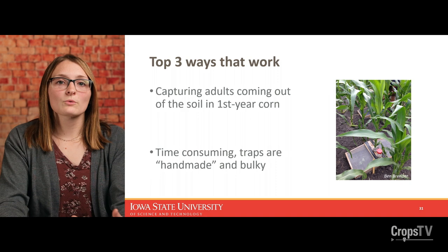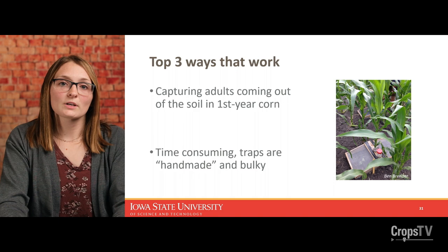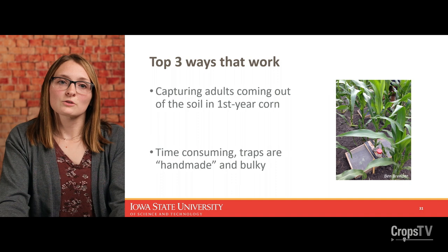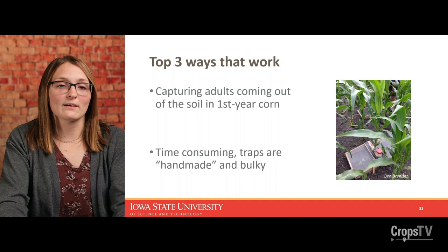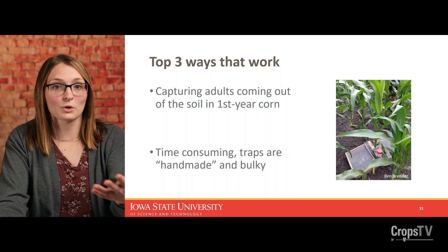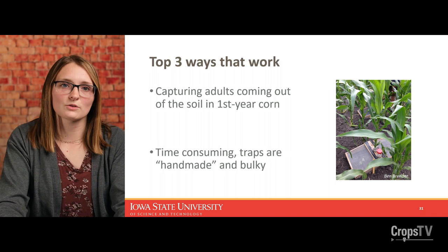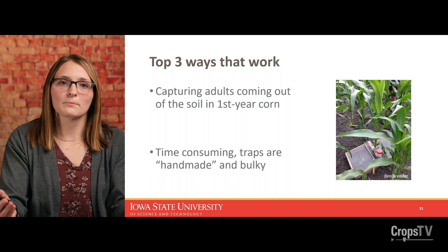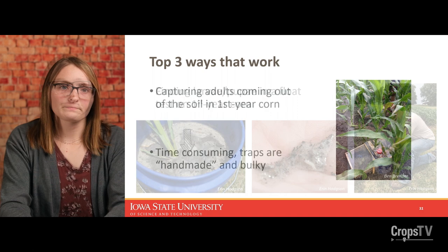It may take a little more work to identify a variant in a first-year corn field. One way that could work is capturing adults coming up out of the soil in first-year cornfields using emergence traps. These traps are usually handmade, heavy and bulky — I don't expect anyone to be doing this — but know that this would be a good confirmation method because you should not be seeing adults coming up out of the soil in first-year cornfields.